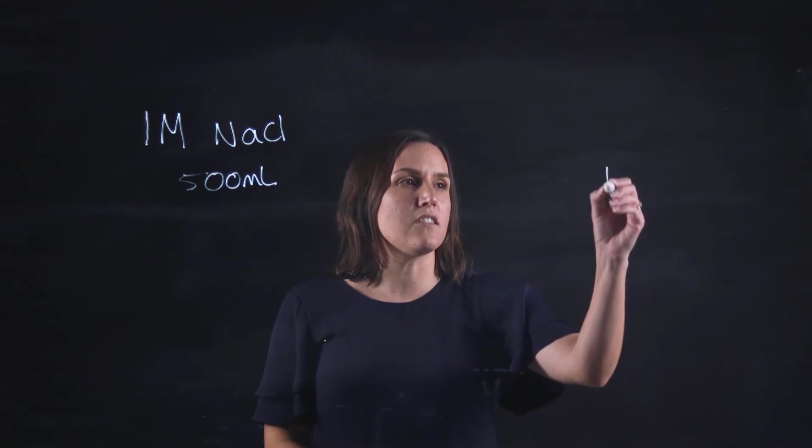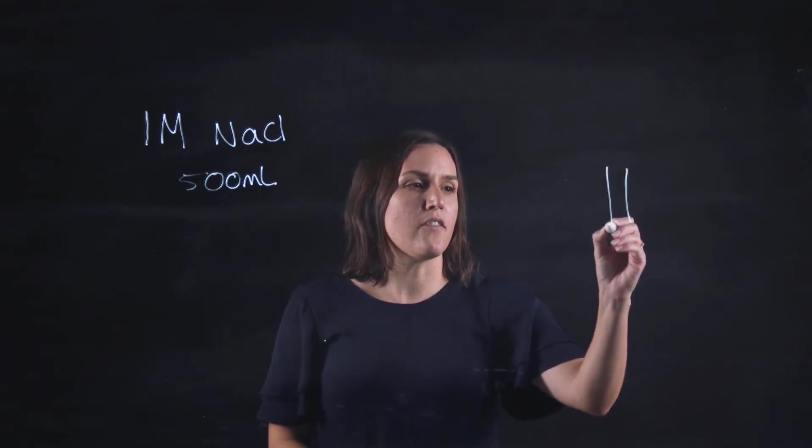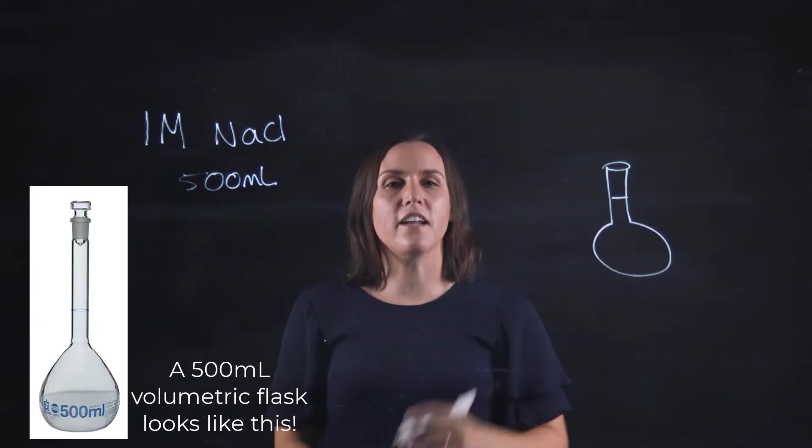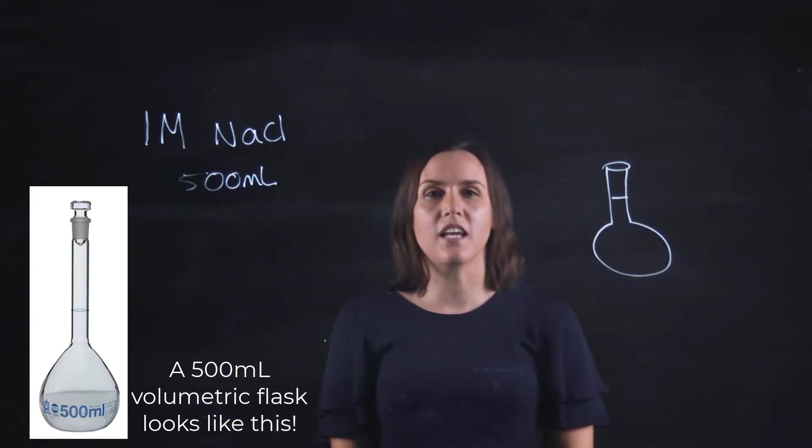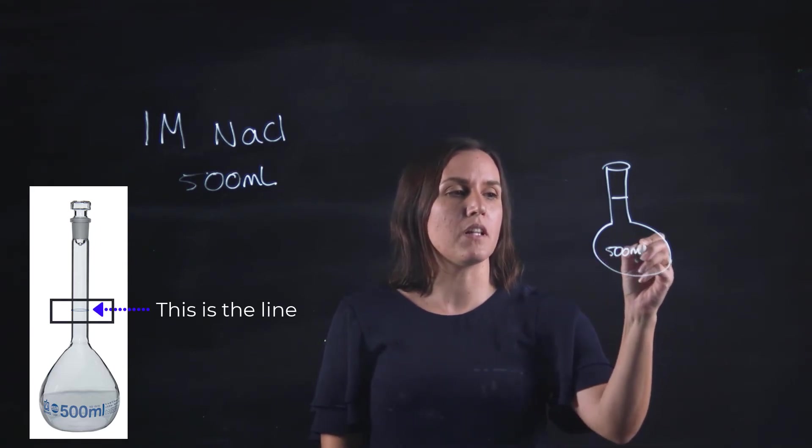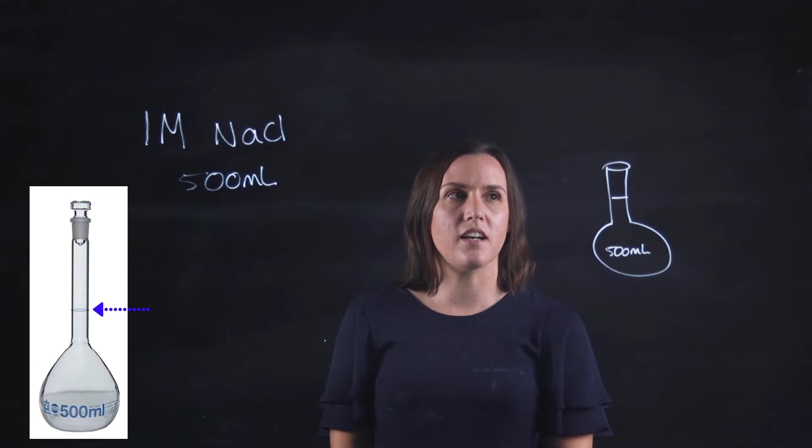So the goal is to have a volumetric flask that has one line on it, and that one line will indicate the volume of that flask. The one that I would need to use would be a 500 millilitre volumetric flask.